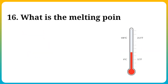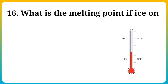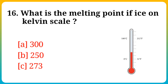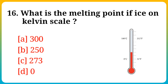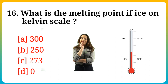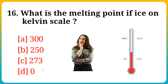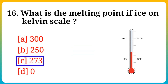Question number 16. What is the melting point of ice on the Kelvin scale? Option A: 300, B: 250, C: 273, D: 0. Answer is option C: 273.